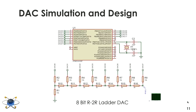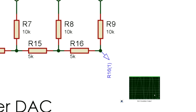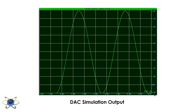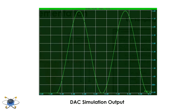Proteus was first used to simulate our custom digital-to-analog converter. We used an R2R ladder design to make the 8-bit audio peripheral. As seen in the graph, the DAC was able to approximate the signal with 256-level resolution.